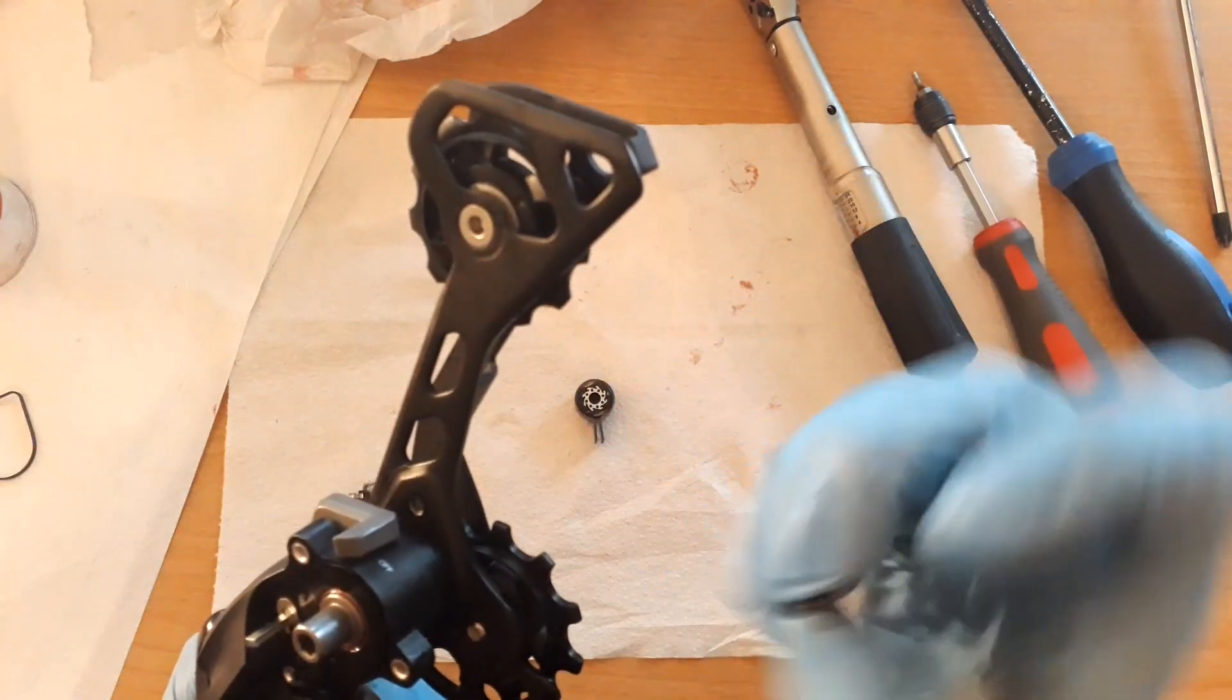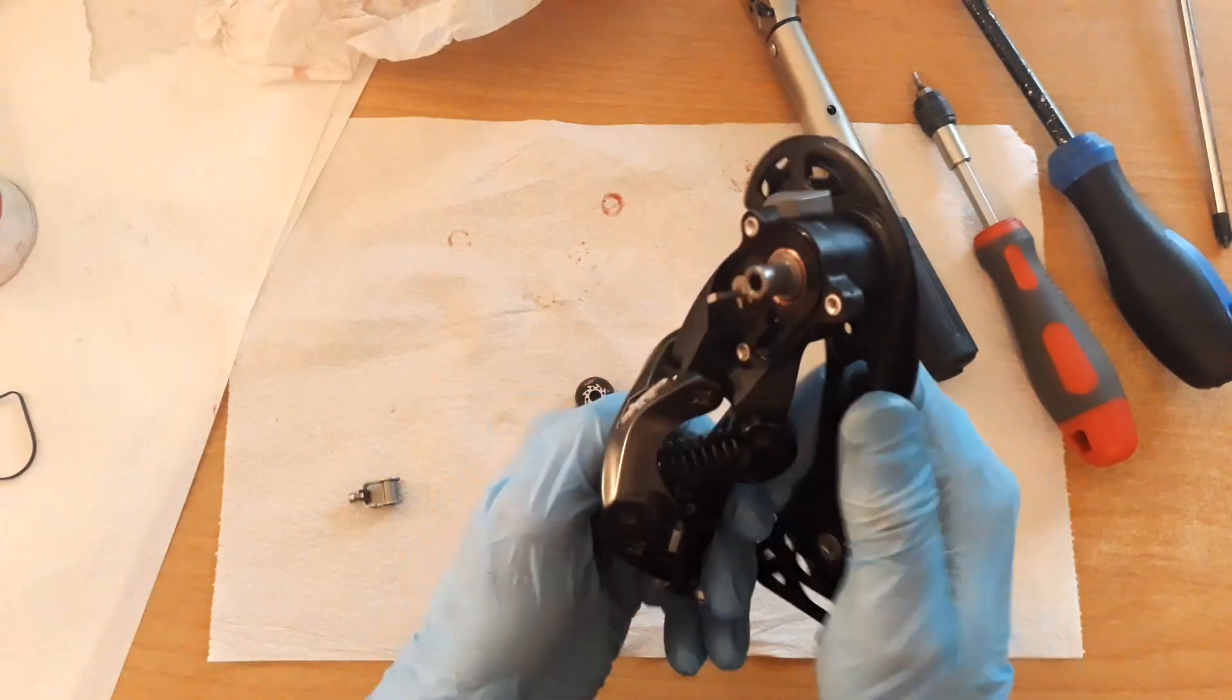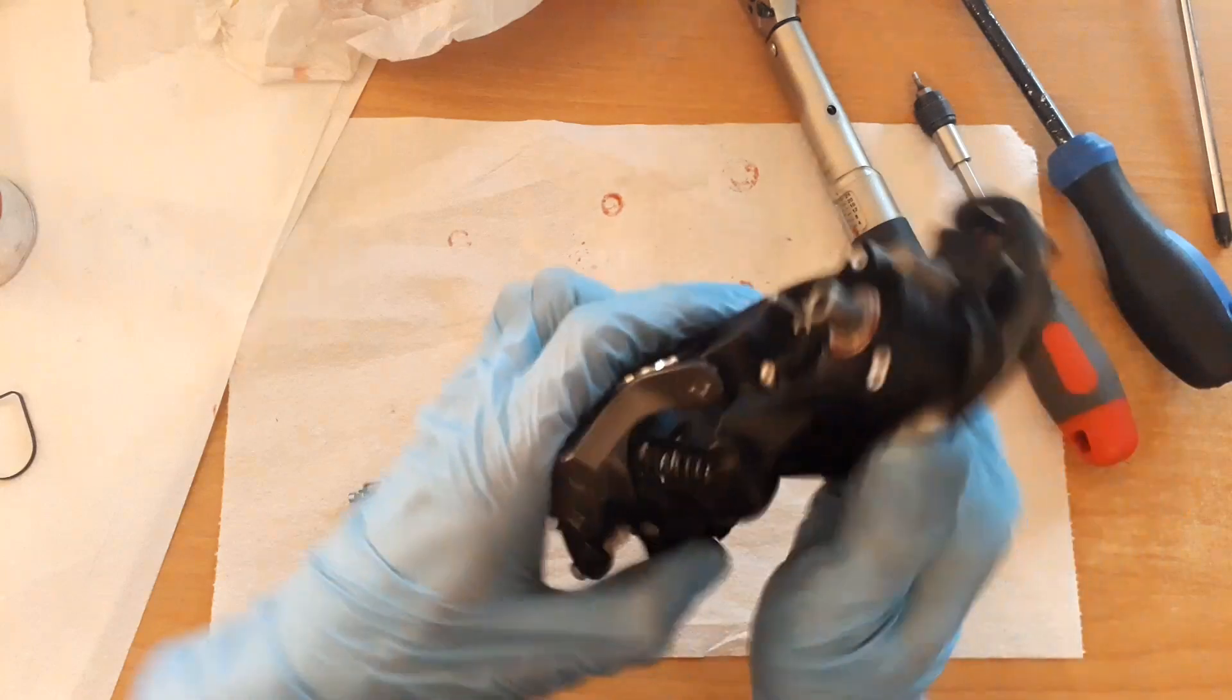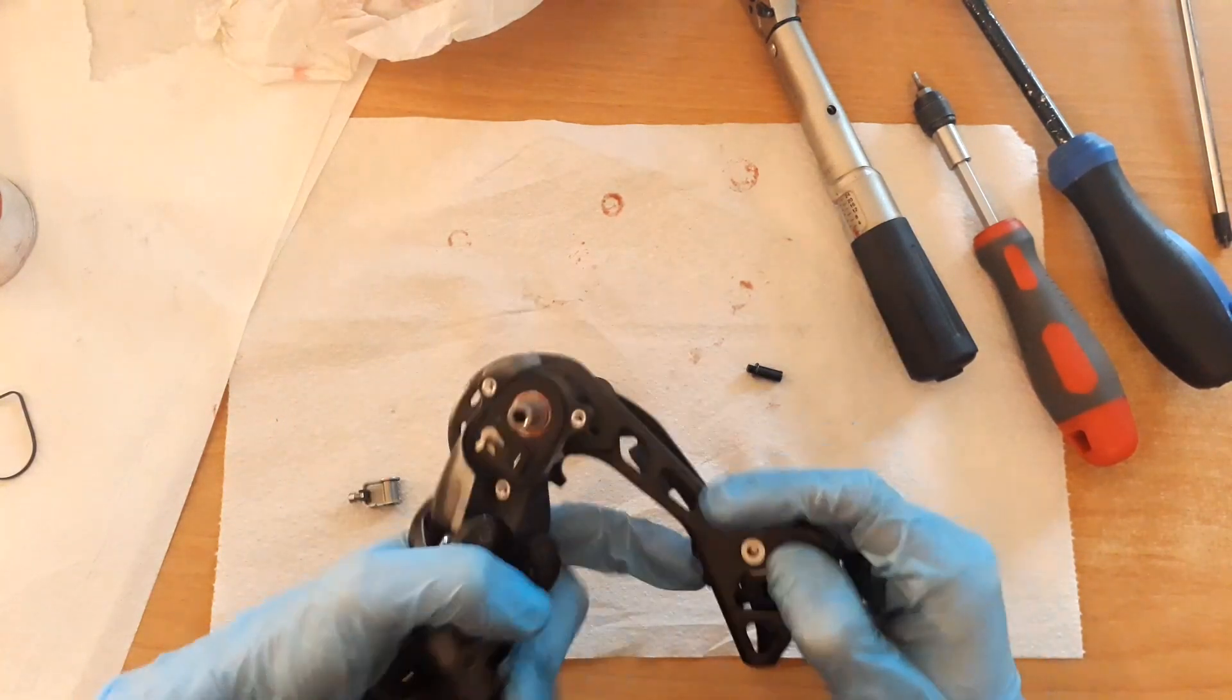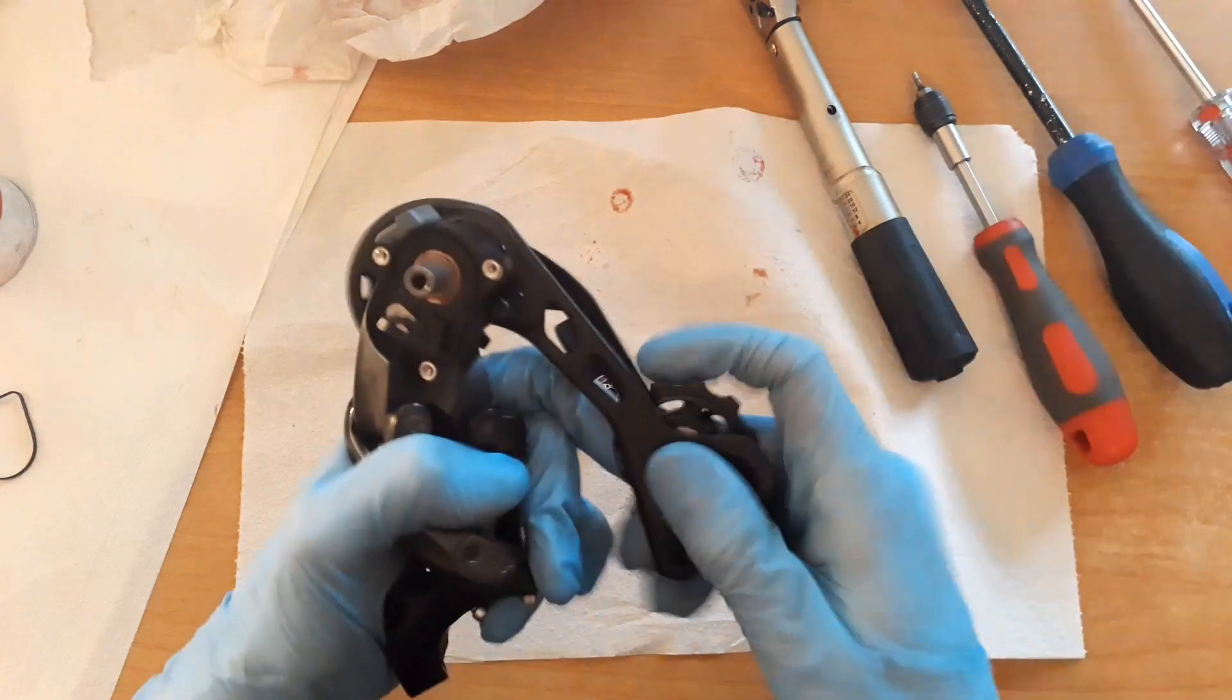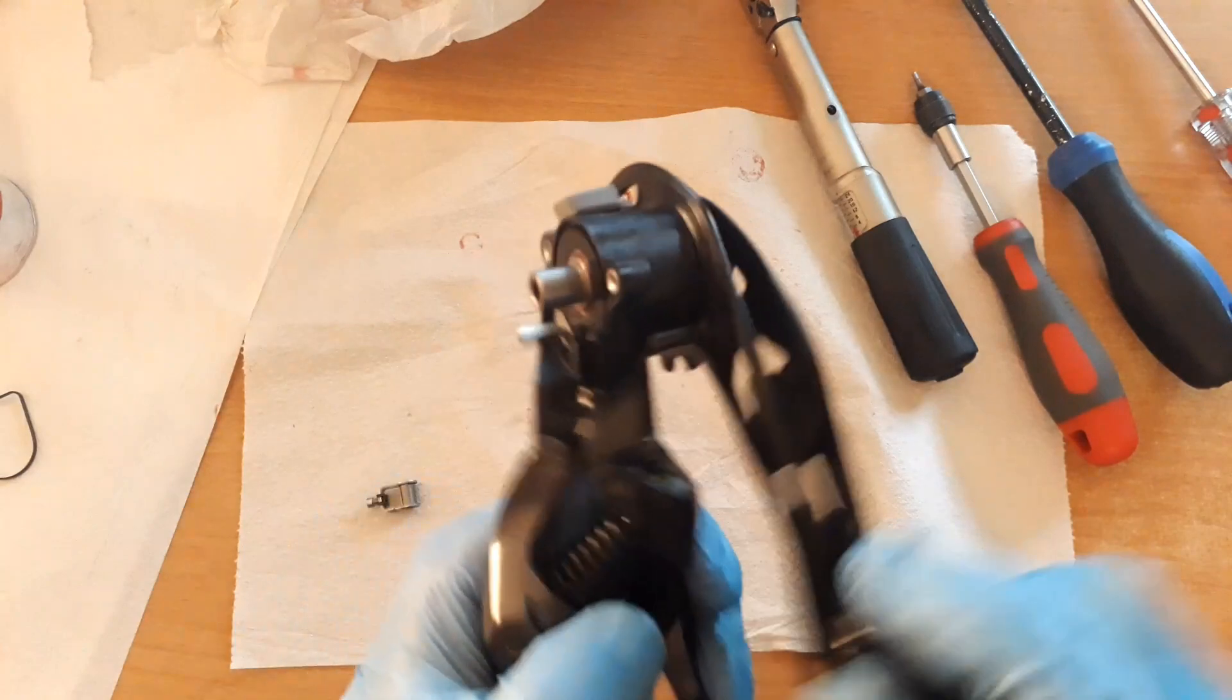Maybe you want to add some thread lock on it, I don't. So move the derailleur out of the way. This way around. Hold the cage in place, tighten the screw, and the blocking pin prevents the cage from moving too far.